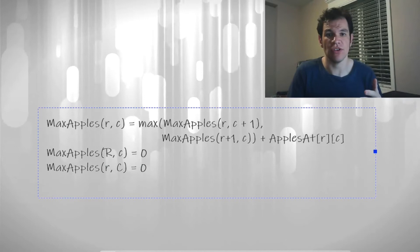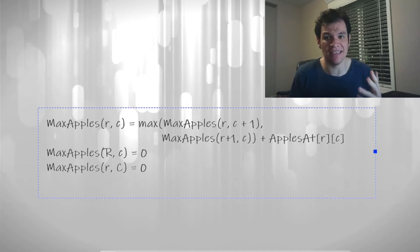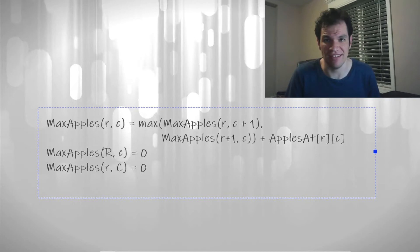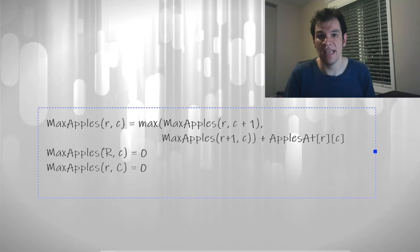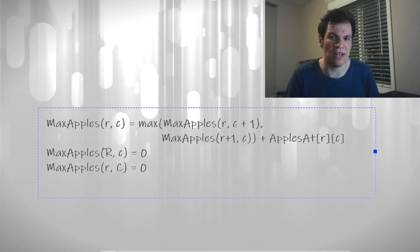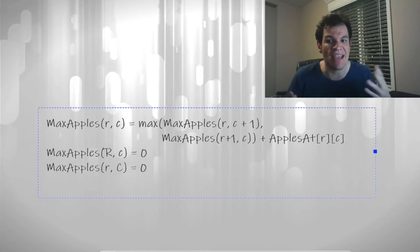Now we are going to analyze it to be able to implement an iterative solution for this. As you can see, in the right side of the formula, the values required for the arguments of max apples are always greater than the arguments on the left side.